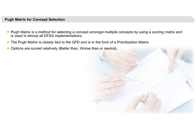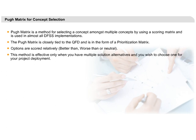Options are scored relatively. Score +1 for a solution better than the current solution. Score 0 if the solution is the same in effectiveness. And score -1 if the solution is worse than the current solution. This method is effective only when you have multiple solution alternatives and you wish to choose one for your project deployment.